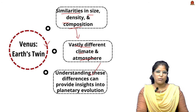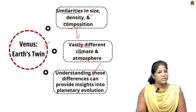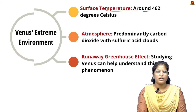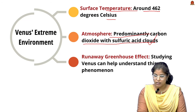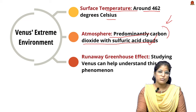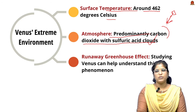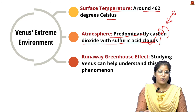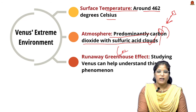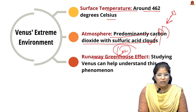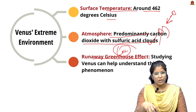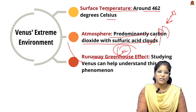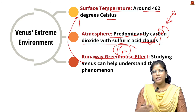Venus has a surface temperature of around 462°C and an atmosphere predominantly consisting of carbon dioxide with sulfuric acid clouds, making visual observation very difficult. The ISRO mission carries a radar that penetrates these clouds to examine Venus's atmosphere. The CO2-rich atmosphere also creates a runaway greenhouse effect, trapping heat and increasing surface temperature.